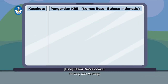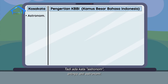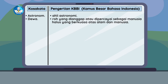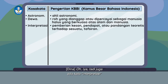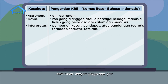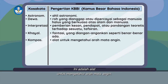Habis belajar tentang Rasi Bintang, kita jadi tahu beberapa kosa kata baru. Tadi ada kata astronom, artinya ahli astronomi. Juga ada kata dewa, yang berarti roh yang dianggap atau dipercayai sebagai manusia halus yang berkuasa atas alam dan manusia. Tadi juga ada kata interpretasi, maknanya pemberi kesan, pendapat, atau pandangan teoretis terhadap suatu tafsiran. Kalau kata khayal, artinya fantasi yang diangan-angankan seperti benar-benar ada. Juga ada kata kompas, yaitu alat untuk mengetahui arah mata angin.